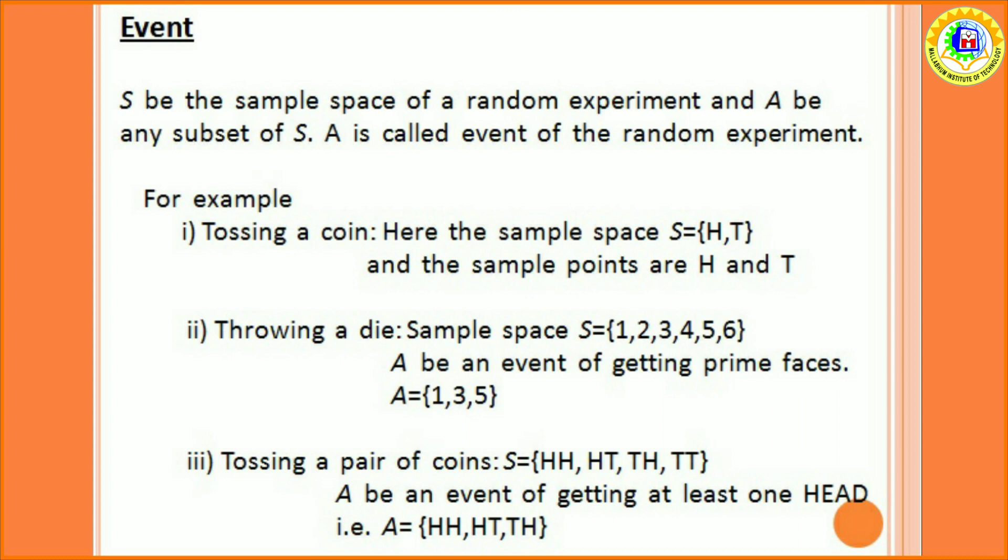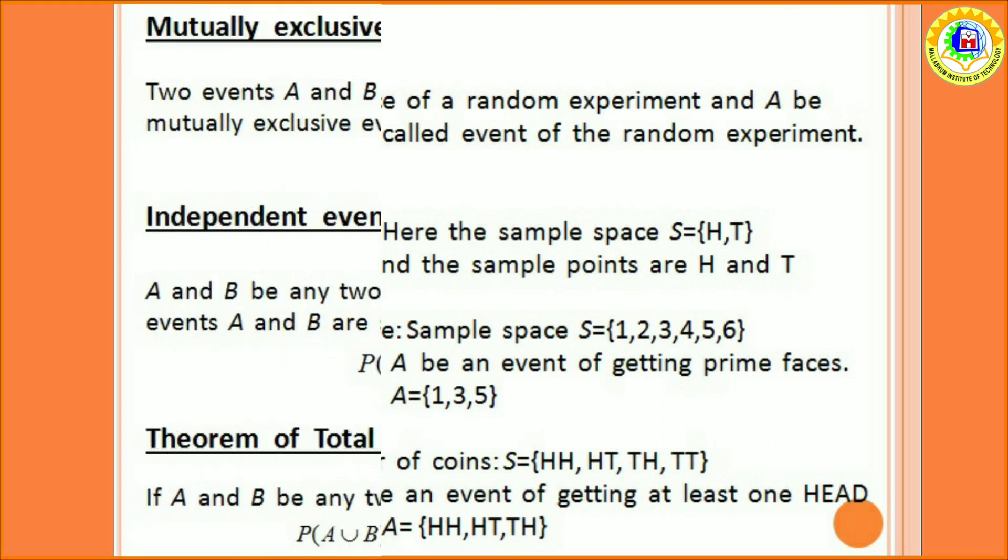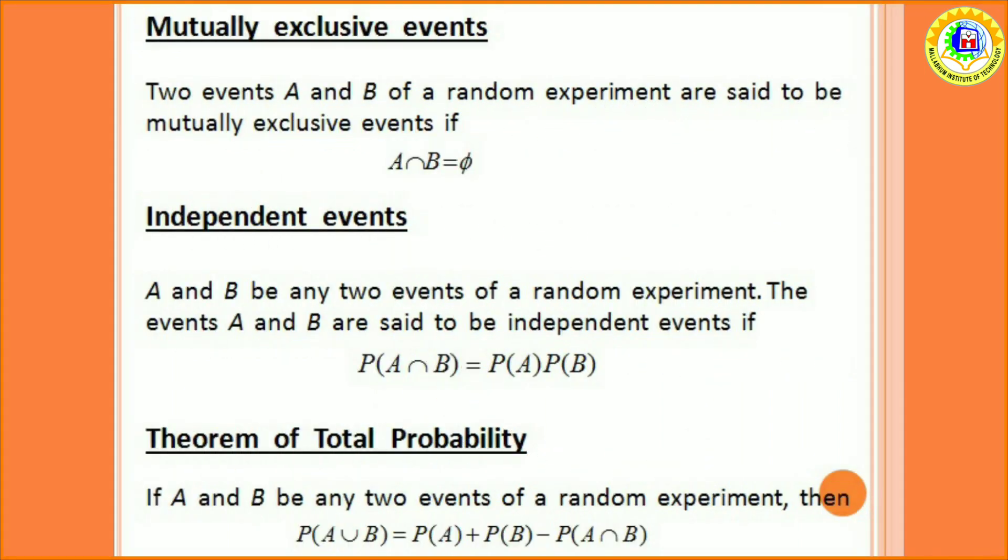Similarly, if we consider the random experiment of throwing a pair of dice, the sample space contains 36 sample points. Next, mutually exclusive events. Two events A and B of a random experiment are said to be mutually exclusive events if A intersection B equal to phi. That is, there is no common elements in A and B.